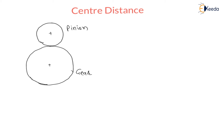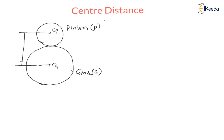Now, pinion is represented by the letter P and gear is represented by the letter G. The distance between the centers of the pinion and gear — that is, the center of the pinion and the center of the gear — is called center distance.